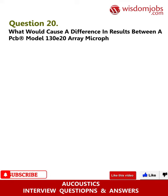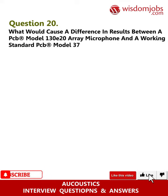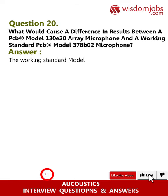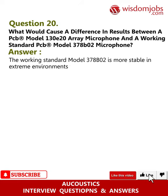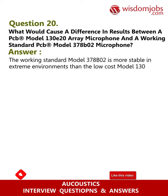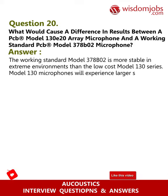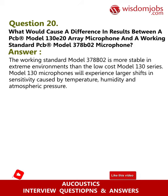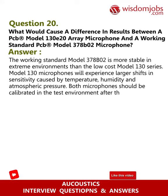Question 20: What would cause a difference in results between a PCB model 130E20 array microphone and a working standard PCB model 378B02 microphone? Answer: The working standard model 378B02 is more stable in extreme environments than the low-cost model 130 series. Model 130 microphones will experience larger shifts in sensitivity caused by temperature, humidity, and atmospheric pressure. Both microphones should be calibrated in the test environment after they have stabilized.